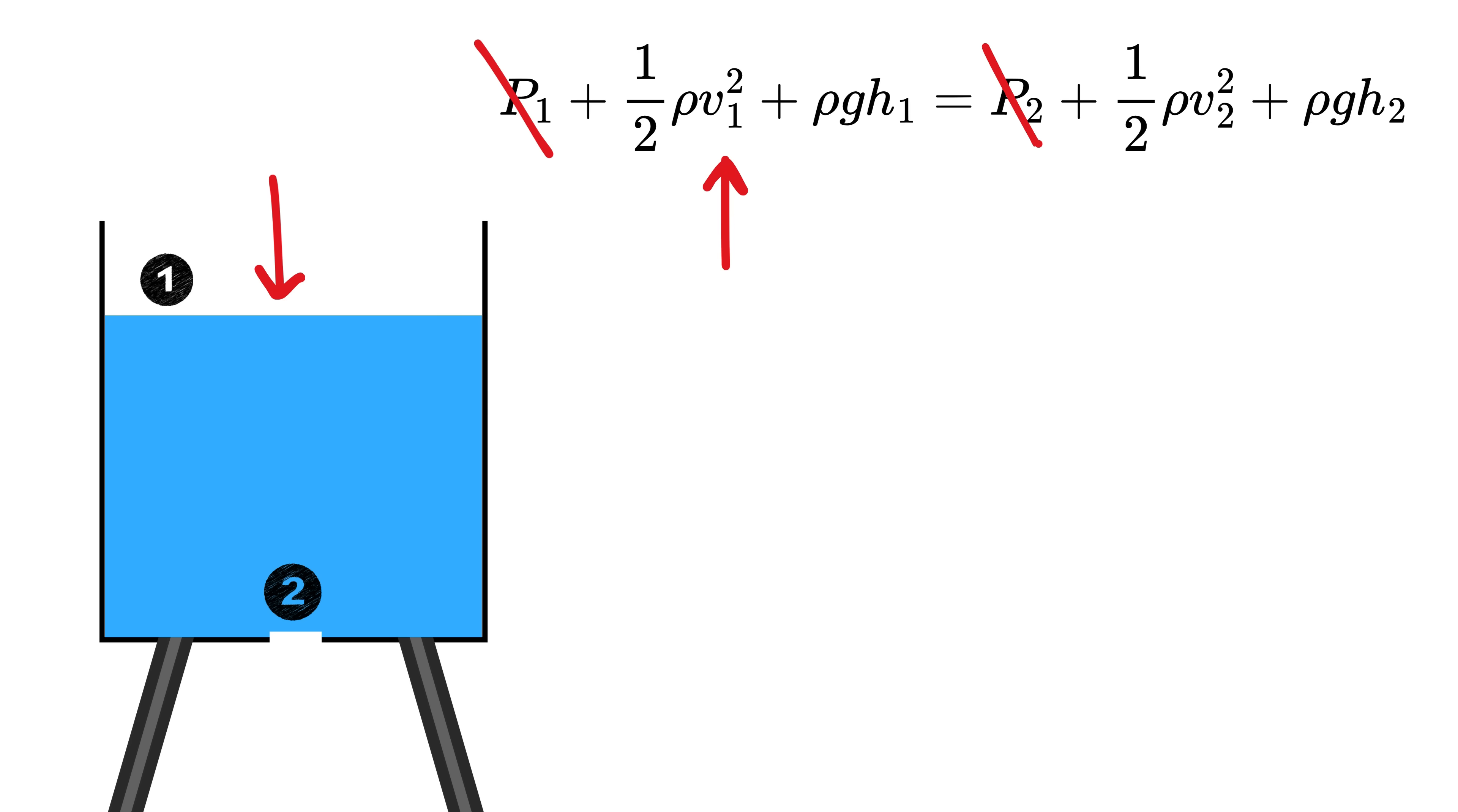Now, the velocity at the top, or point 1, is almost zero, because the tank is very wide and the surface moves very slowly. This means V1 nearly zero. But the water shooting out of the hole moves fast, and gravity is what's driving that motion.